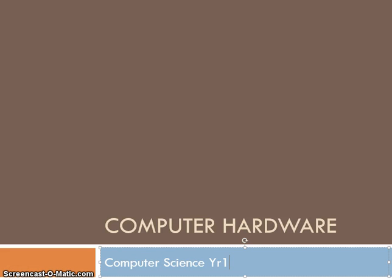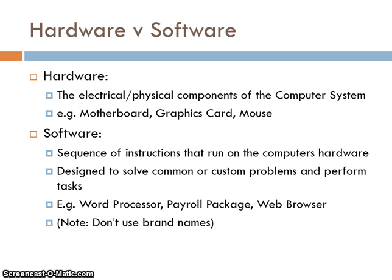An introductory video into computer hardware, for computer science year one. There are two main parts of a computer — these are known as hardware and software.